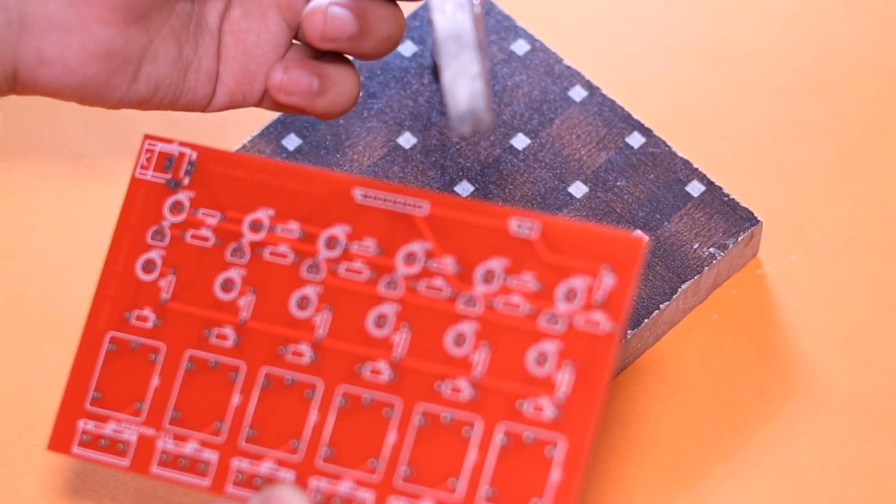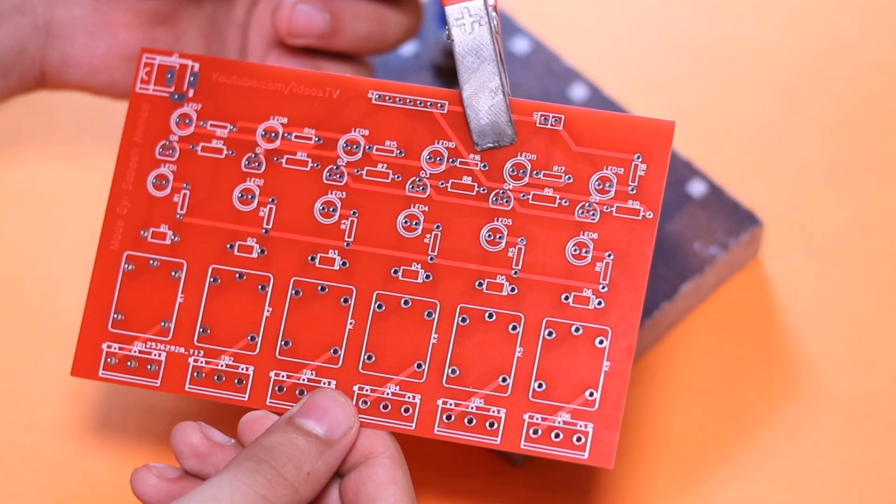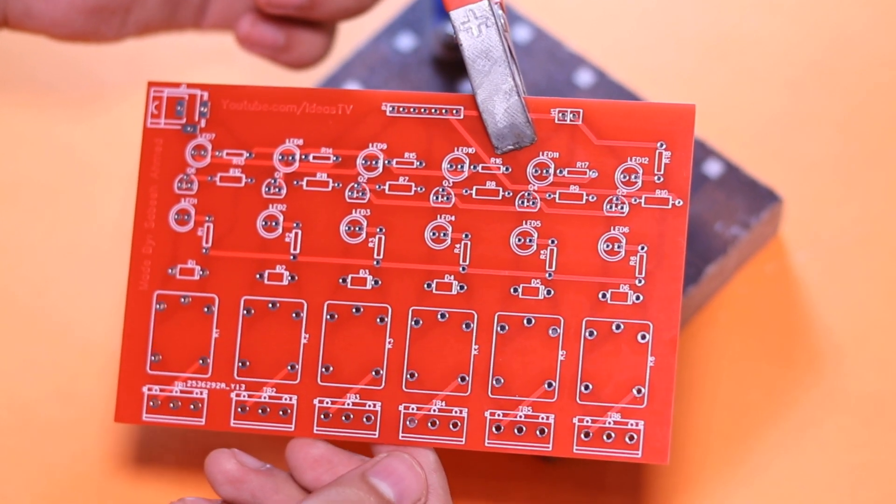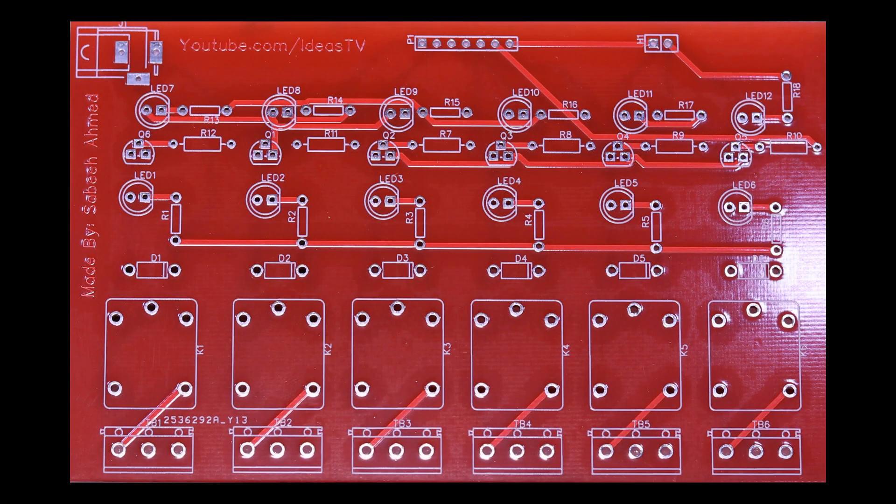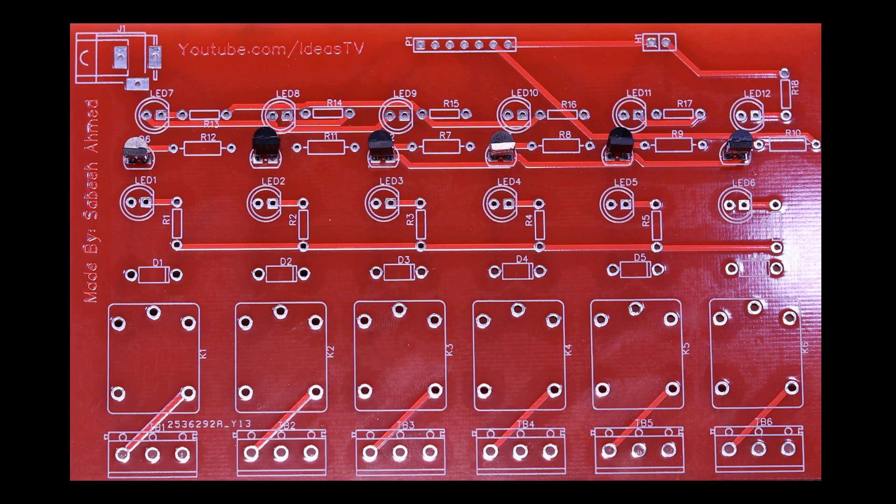Now let me solder all the components to the printed circuit board according to the circuit diagram. I am placing the small components first.